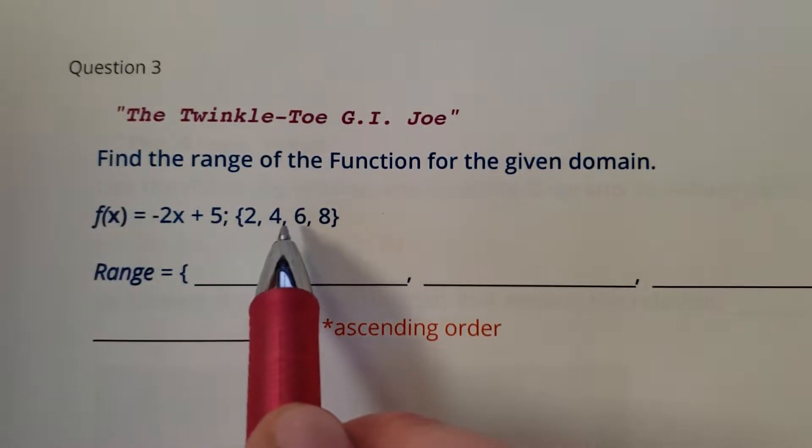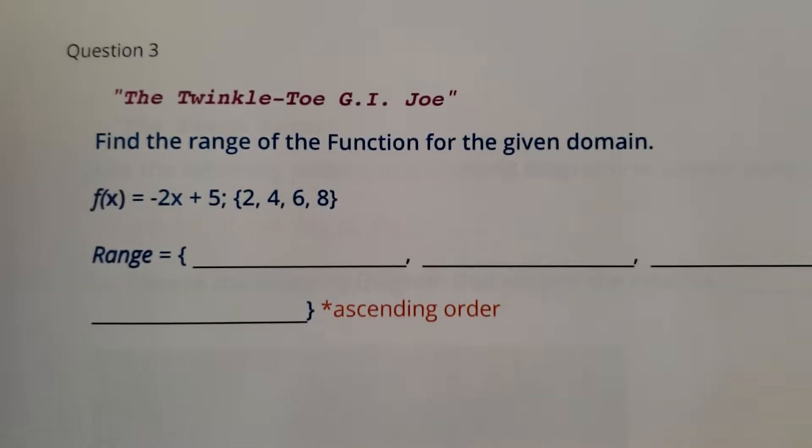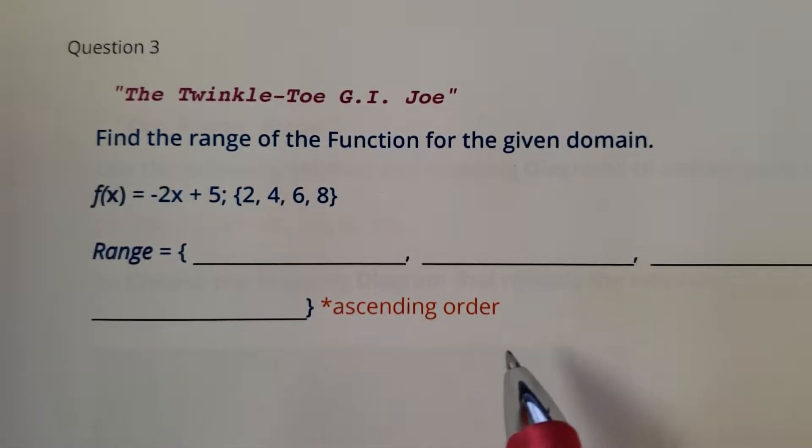Okay, so we have one, two, three, four values. Uh-oh, tricky. It says put it in ascending order.